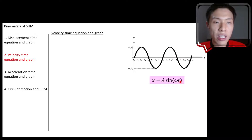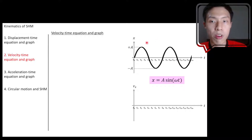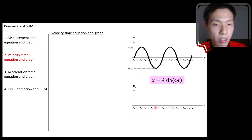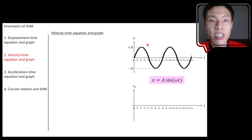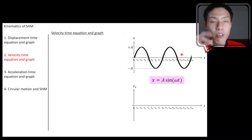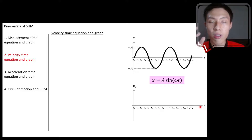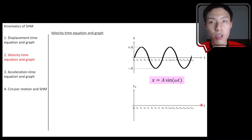We'll now try to relate this displacement-time graph to the velocity-time graph — that means we'll plot the velocity-time graph based on the oscillation we see in the displacement-time graph. Before we draw everything clearly, let's pick certain important points or important moments in the motion to discuss.